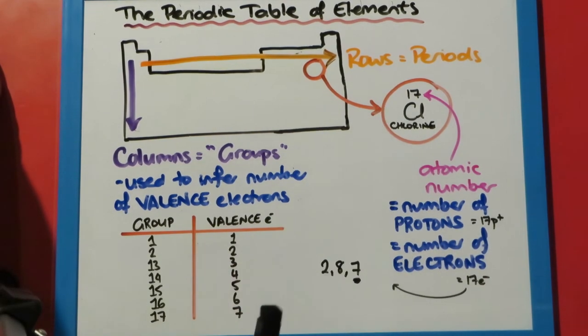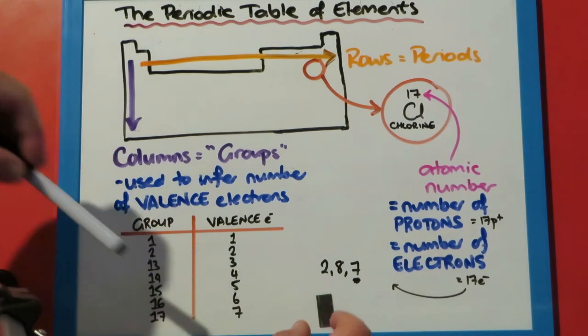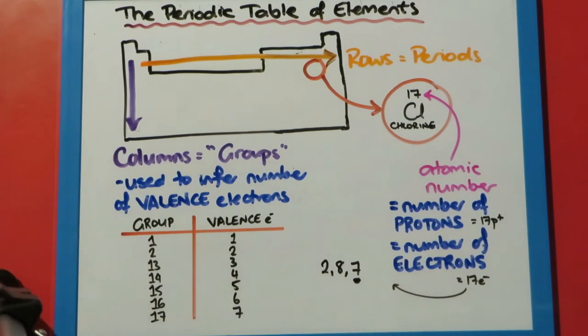The first shell or energy level can take up to two electrons. So if I look at my example of chlorine here, that's 17. The first two of those 17 electrons go in the first shell. There's still 15 more electrons I have to place, so I put eight of those in the second shell.